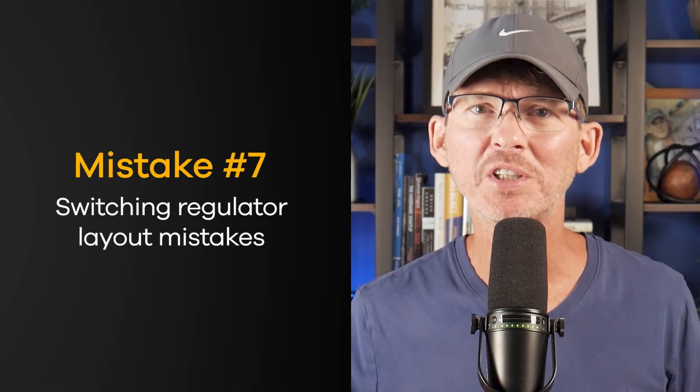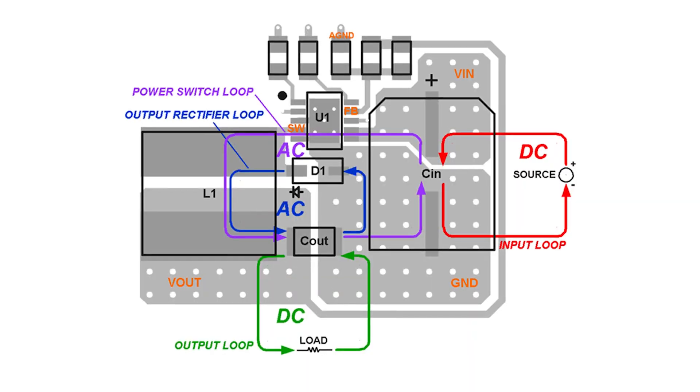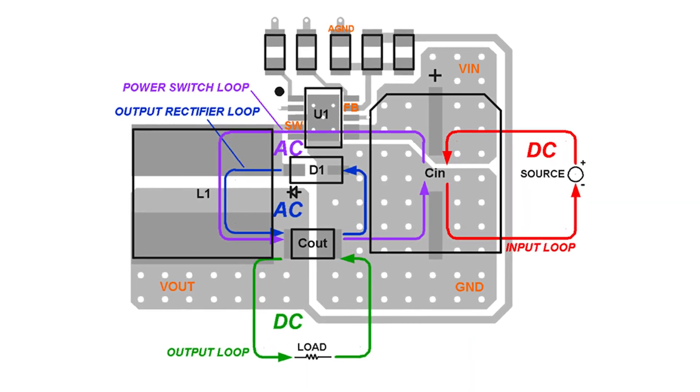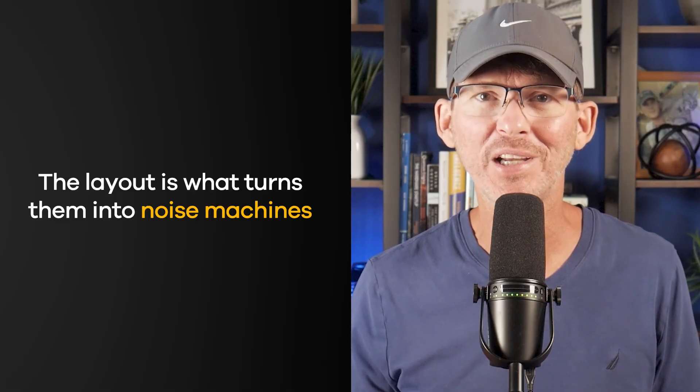Mistake number seven: switching regulator layout mistakes. Switching regulators are one of the most common causes of certification failures. They often look harmless in the schematic, but the layout is what turns them into noise-generating machines. Rapid current switching, poor grounding, and long routing paths create electromagnetic interference even if the circuit seems to work fine. Many designers modify the datasheet layout to save space or make routing easier, but switching regulators behave more like RF circuits than power supplies — small layout changes can have big consequences. It's always best to follow closely the layout recommendations provided in the datasheet by the manufacturer.